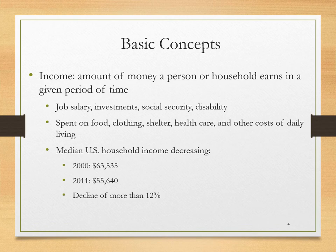The median US income is decreasing, and these numbers are slightly dated, but they do show a general trend. In the year 2000, the average household income was just over $63,000, while in 2011 it was $55,000. Over that decade, that represents a decline of more than 12%.